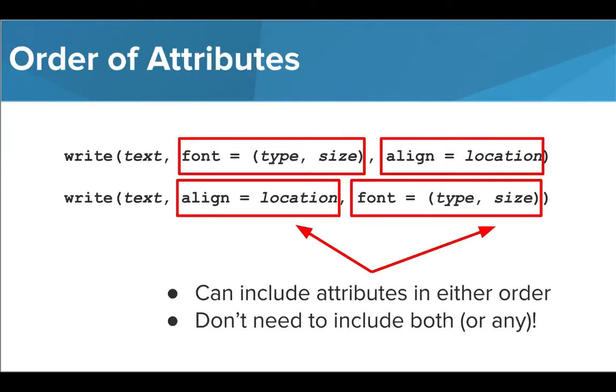An important thing to note is that the attributes of font and align are optional and can be called in any order inside our write function. Though we need to add the text to print as the first parameter, we can choose to add whichever additional parameters we'd like and can place them in either order.